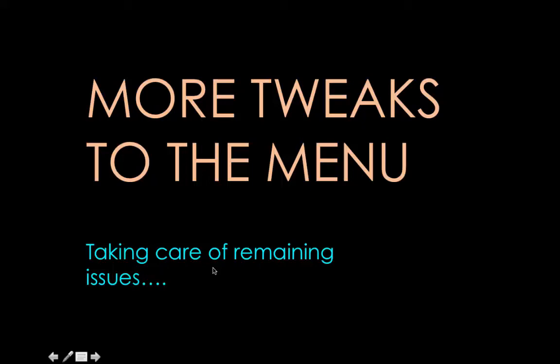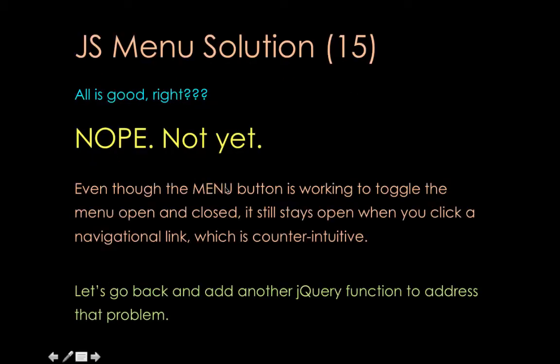Picking up where we left off, we have the menu that's opening and closing now, but we still have some issues. Even though the menu button is working to toggle it open and closed, it still stays open when you click a navigational link, which is counterintuitive. Let's go back and add another jQuery function to address that problem.